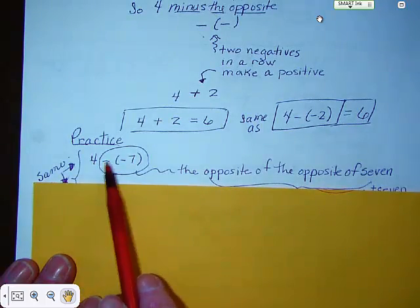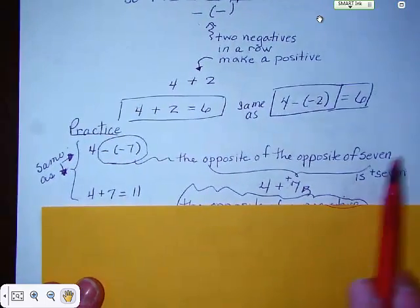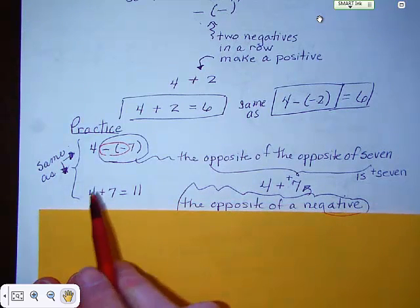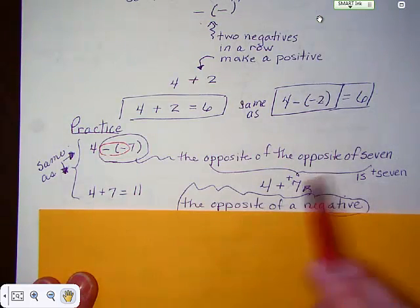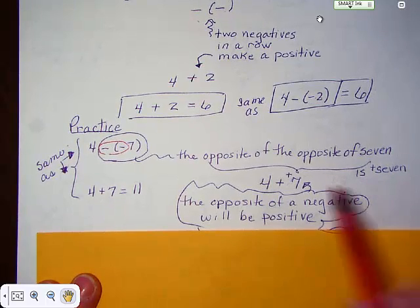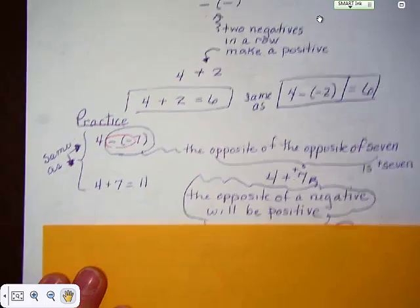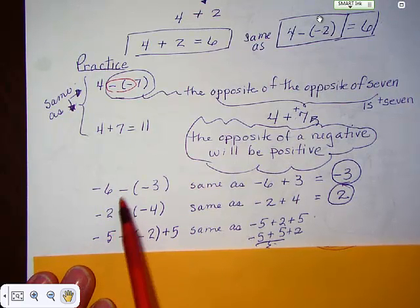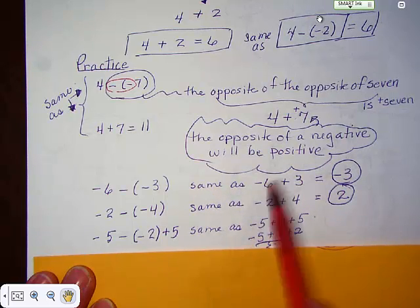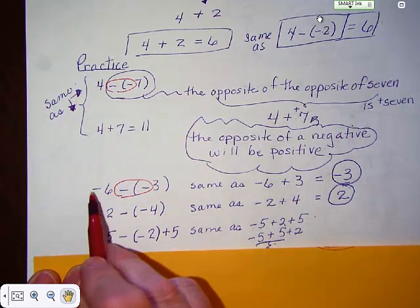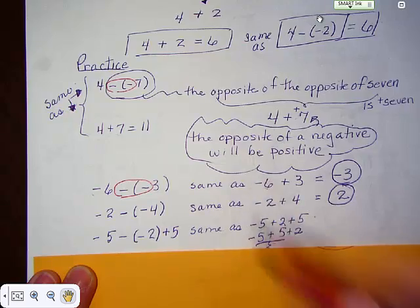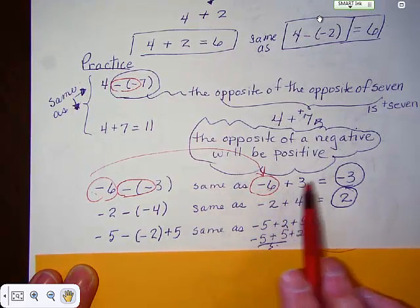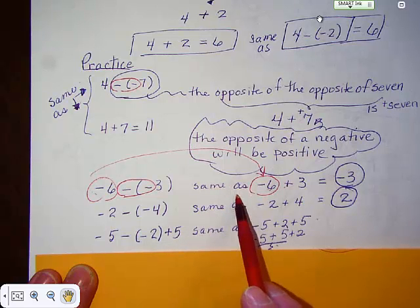Practicing: 4 minus the opposite of 7 — the opposite of the opposite of 7 gives you two negatives, and two negatives make a positive. So you end up with 4 plus 7, which is 11. The opposite of a negative is always going to be a positive. Here's another example: negative 6 minus a minus 3 is the same thing as negative 6 plus 3. Two negatives make a positive, but it doesn't change the first negative. So you still have negative 6 plus 3. You go left 6, come back 3, and you end up with negative 3.